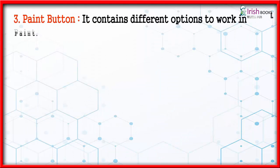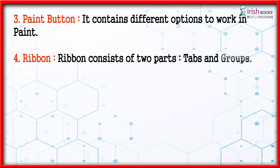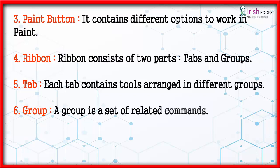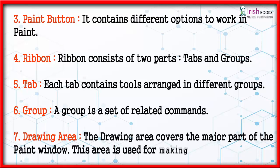Quick Access Toolbar contains buttons to do common tasks. Paint Button contains different options to work in Paint. Ribbon consists of two parts: Tabs and Groups. Each tab contains tools arranged in different groups. A group is a set of related commands. The Drawing Area covers the major part of the Paint window and is used for making colorful drawings.